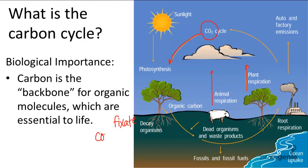Plants fixate this carbon, which means they take the carbon dioxide — a gas — and turn it into a solid. They turn it into glucose, and the amount of CO2 that's breathed out by these plants and animals is approximately equal to the amount of CO2 that's breathed in by plants. This is the first part of the cycle.